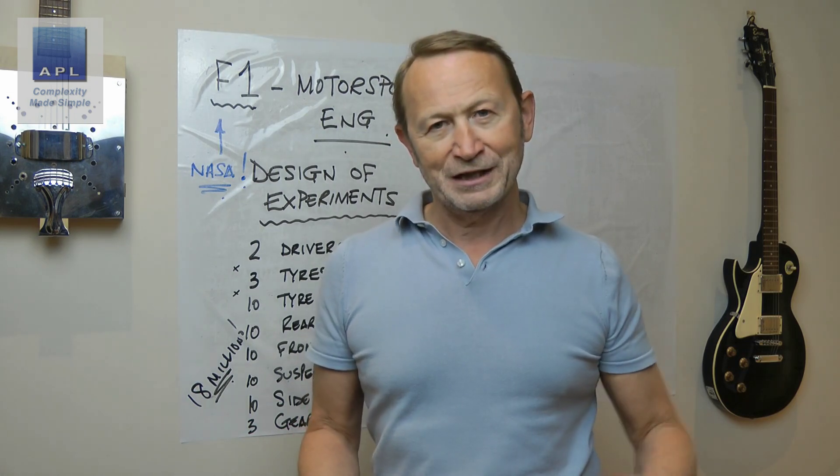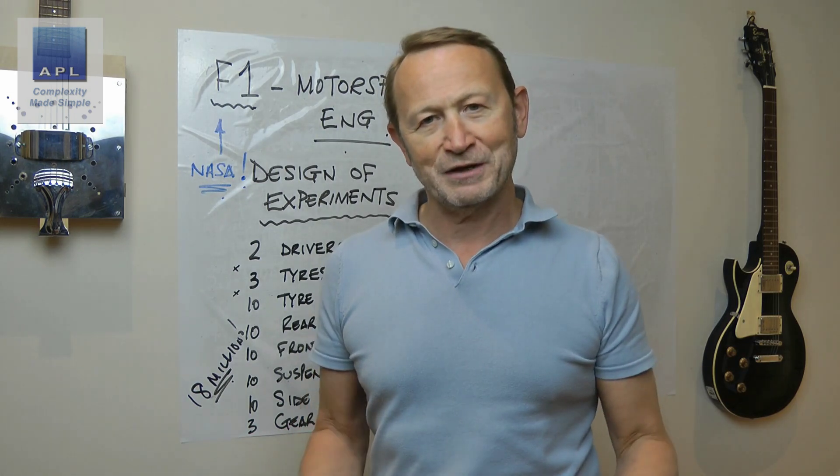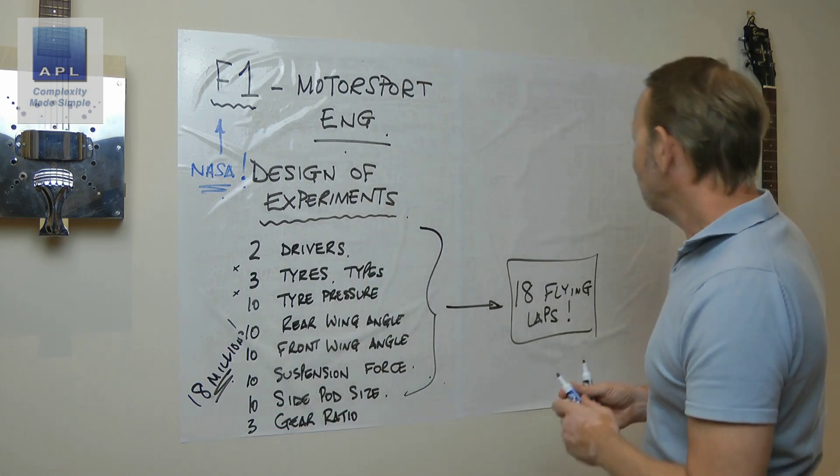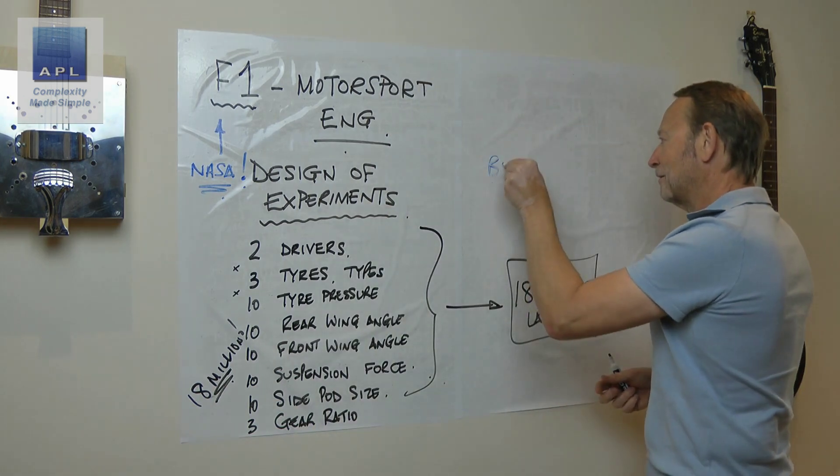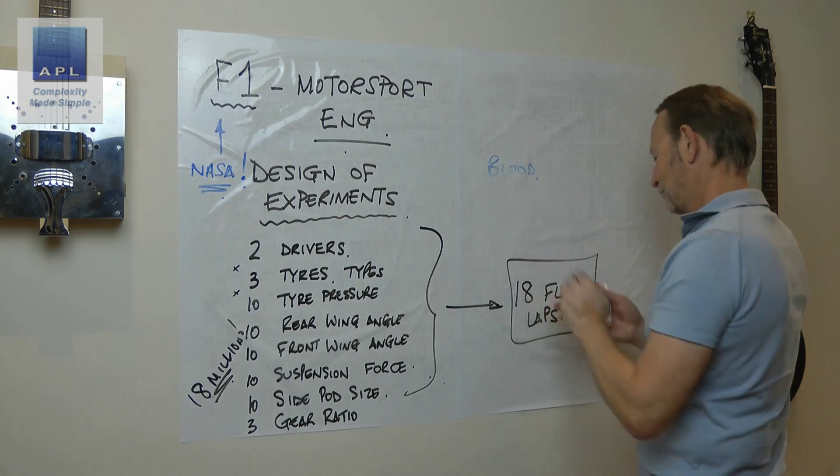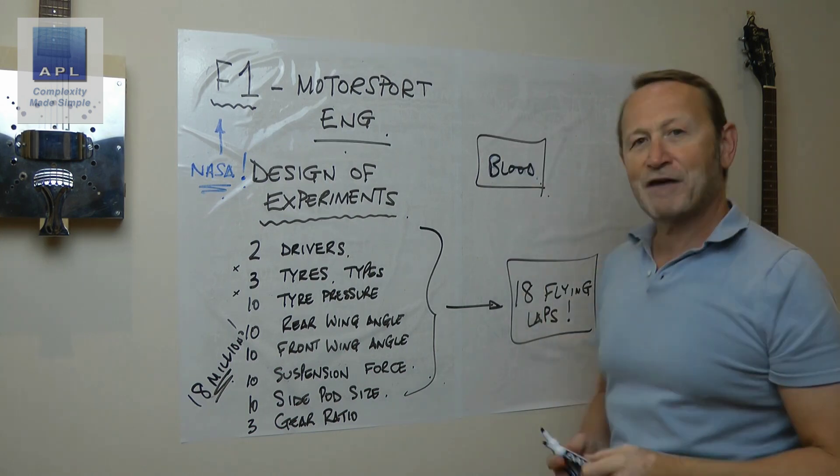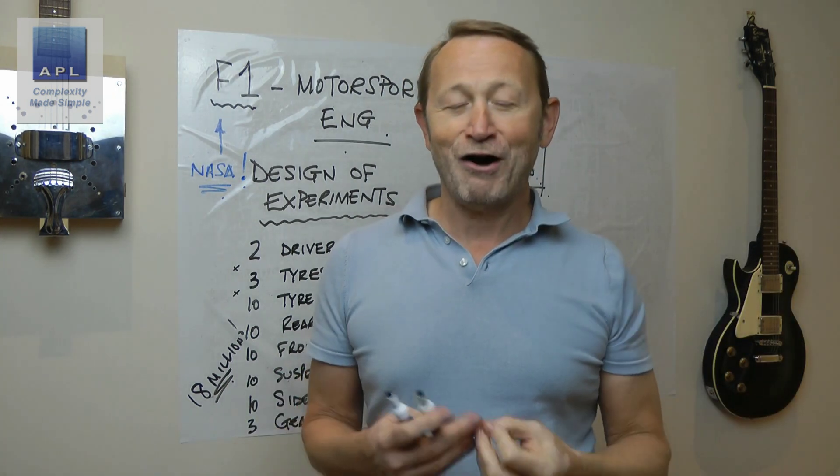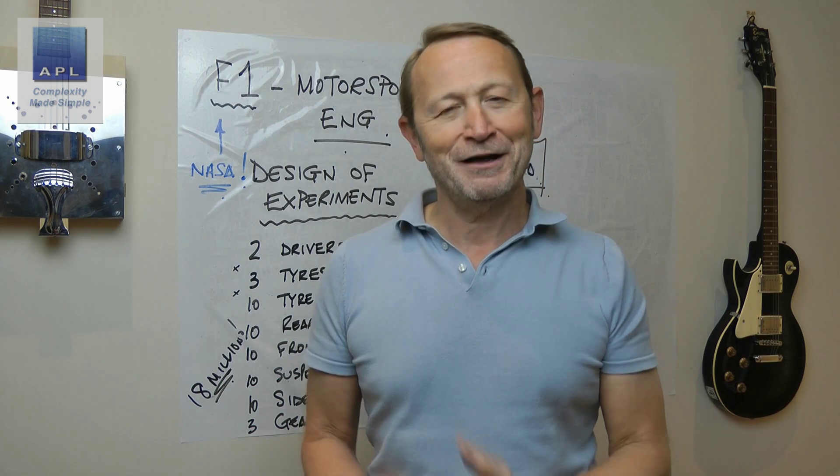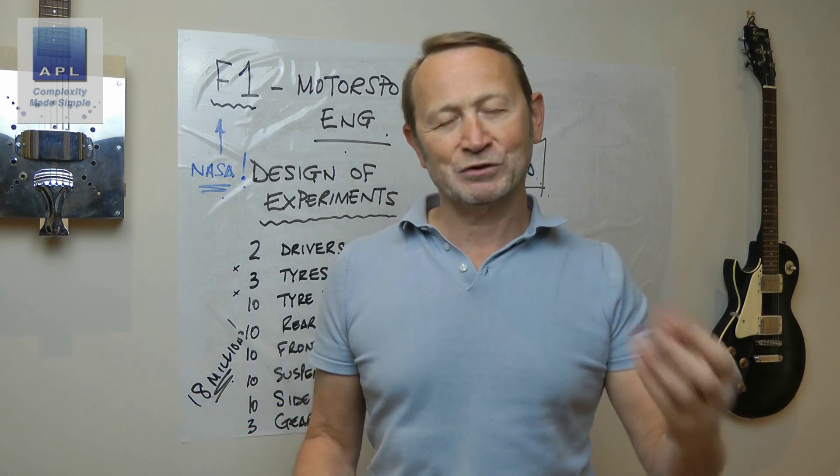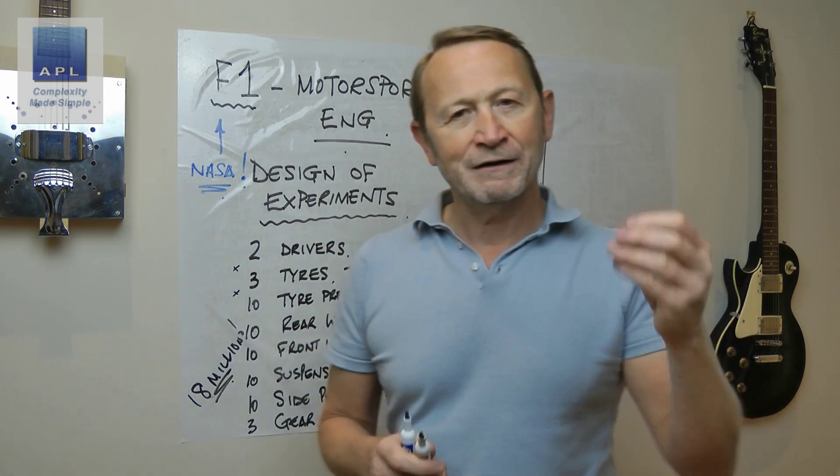And by the way, I can do this to any system. So if you look at this system here, all about understanding blood, look at this example. There are seven variables in this.